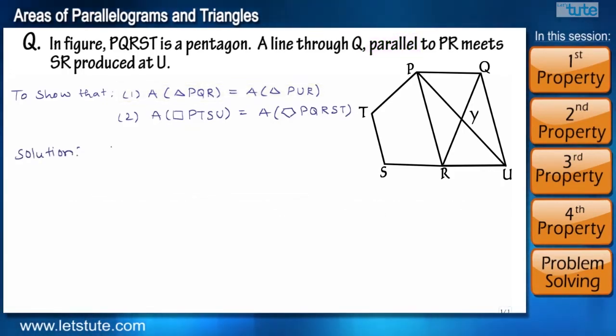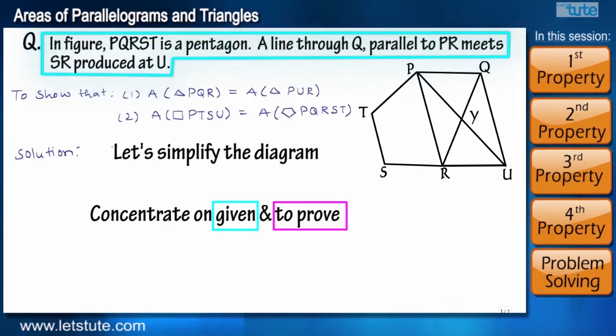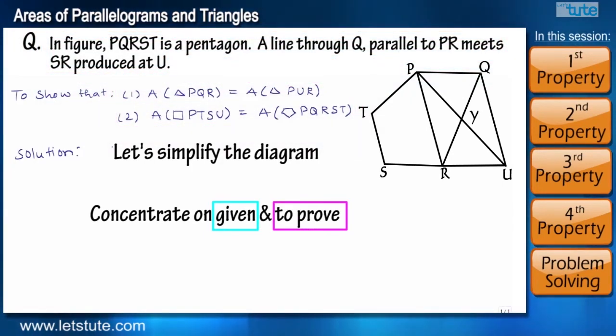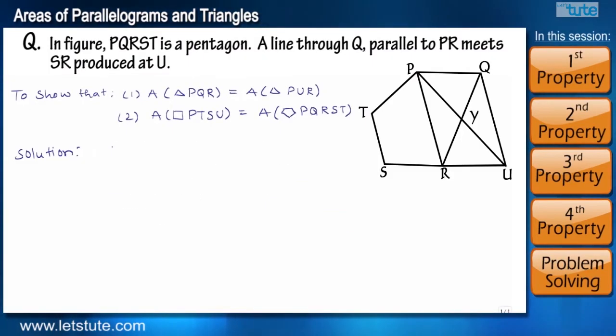Now, we have to prove that area of triangle PQR is equal to area of triangle PUR. Next thing is you don't have to be afraid by looking at the diagram. Let's just try to simplify the diagram and concentrate on the part we are given and we need to prove first. So the most important part in such questions is to find out the parallel lines which are PR and QU.